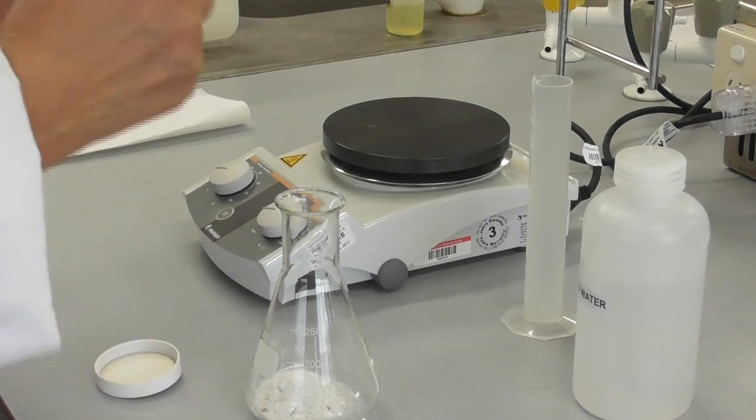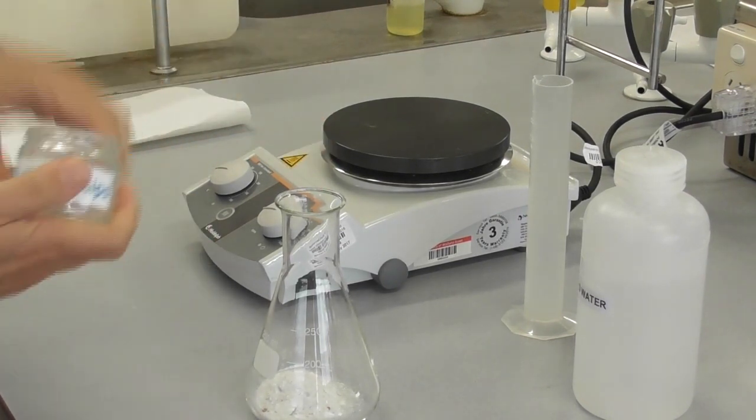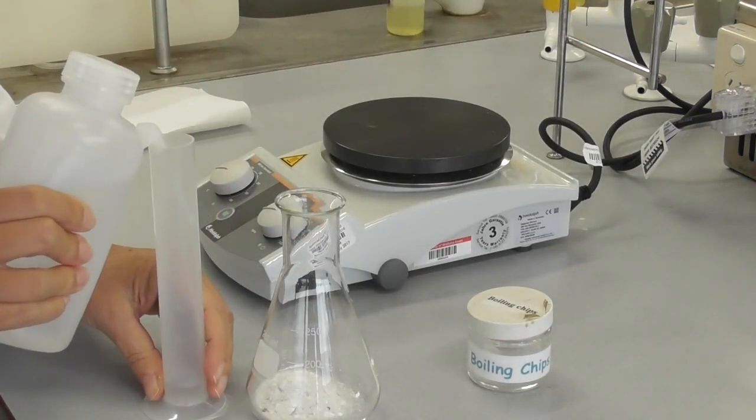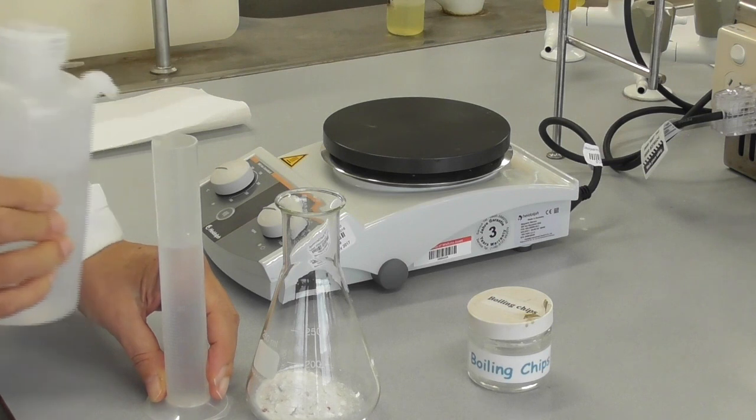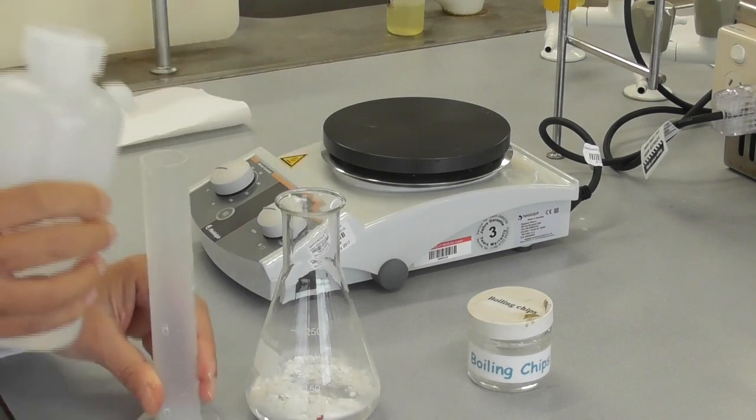Next we add a few boiling chips, 3 or 4 or 5 will be appropriate, and then we measure out 100 ml of distilled water. We add this into the flask with the benzoic acid and the boiling chips.